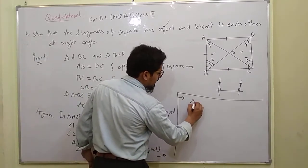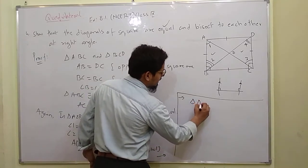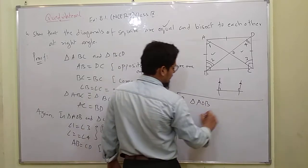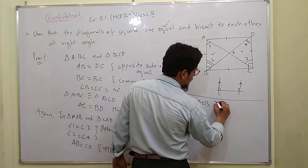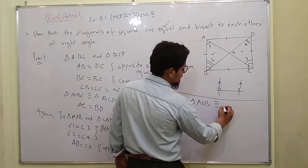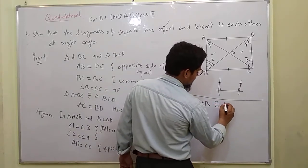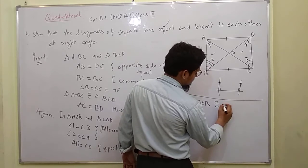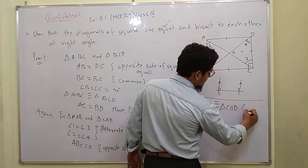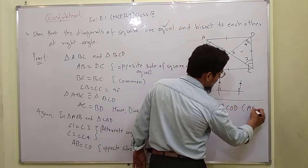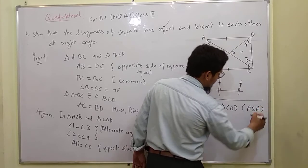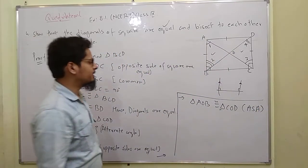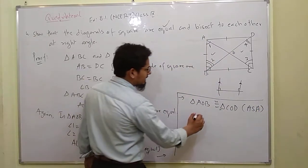So we can say triangle AOB is congruent to triangle COD. This is by angle-side-angle.